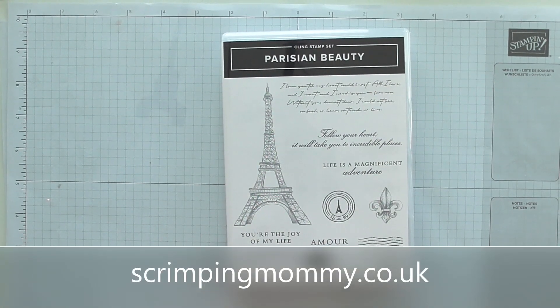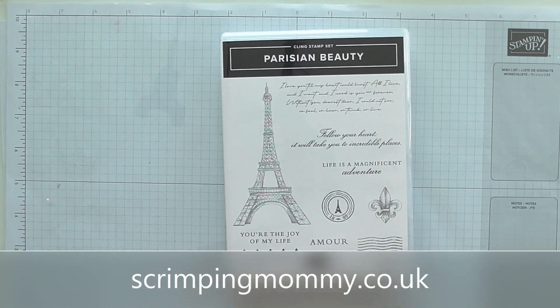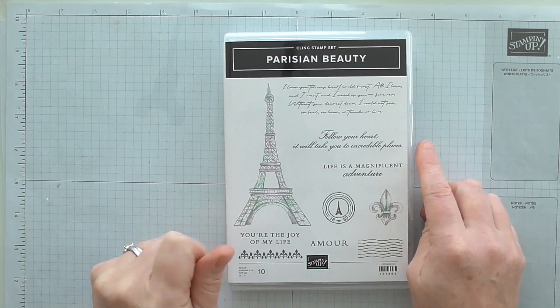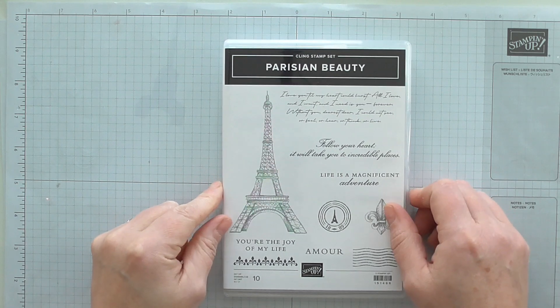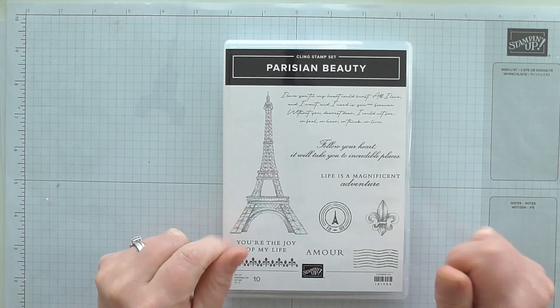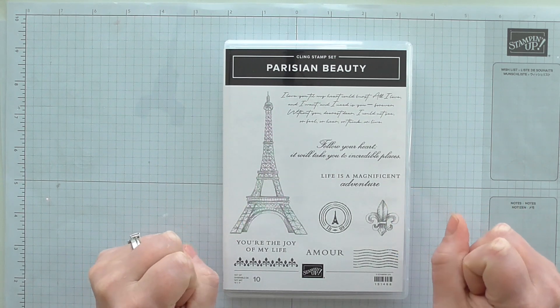Hello everyone, Amanda here from ScrimpingMama.co.uk. Thanks for joining me today and this is my number one of my 31 Day Crafty Challenge. We're starting with a really pretty card using a brand new Parisian Beauty stamp set.